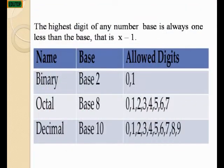The highest digit of any normal base is always 1 less than the base — that is, x minus 1. As we can see in the table here, where base 2 has digits 0 and 1, which is 1 less than the base. And octal, base 8, has digits 0, 1, 2, 3, 4, 5, 6, and 7 — which is also 1 less than the base.